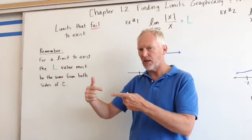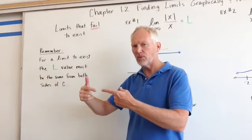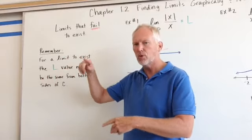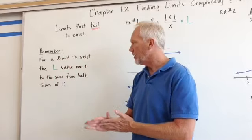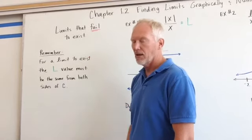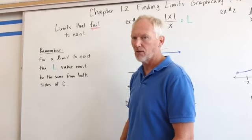So as X approaches some C again, we have to make sure that it comes from both sides. It can't be from two different pieces there and go to two different Y values. If it does, then that may or does not exist.